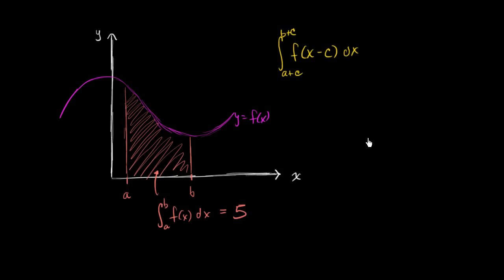So I'm assuming you've had a go at it. So what is f of x minus c? Well that's essentially the function f of x shifted to the right by c. So let's do that. So if we take that function, we shift it to the right. Let's say that this distance right over here is c. So if you shift it to the right by c, it's going to look something like that.